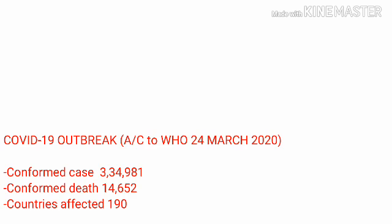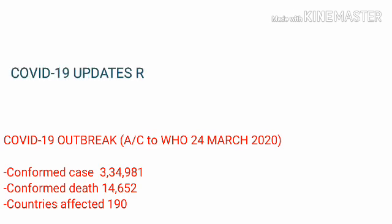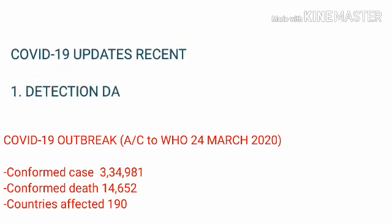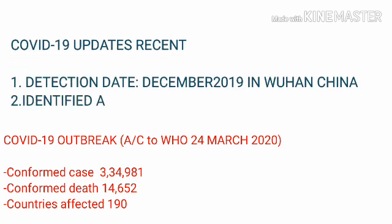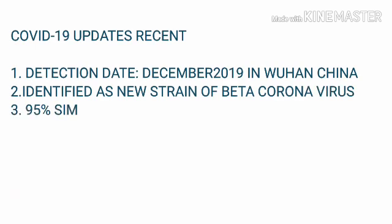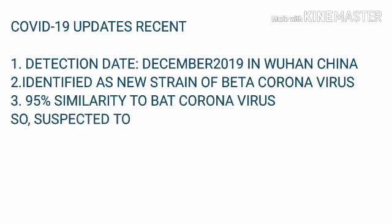COVID-19 outbreak. According to WHO, as of 24 March 2020: confirmed cases — 334,981; confirmed deaths — 14,652; countries affected — 190. COVID-19 recent update: first detected in December 2019 in Wuhan, China. Identified as a new strain of beta-coronavirus with 95% similarity to bat coronavirus, and suspected to have originated from bats.